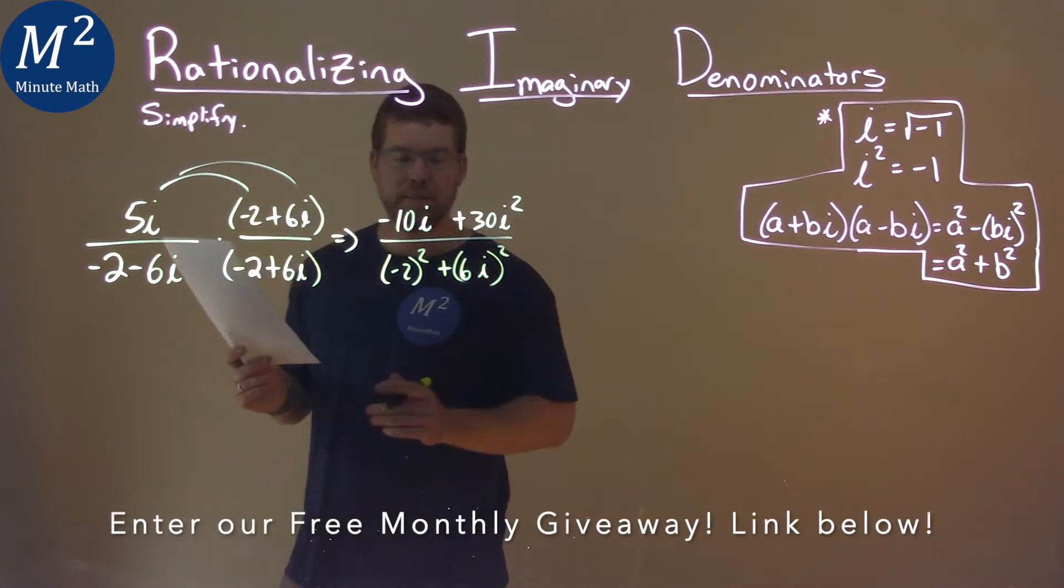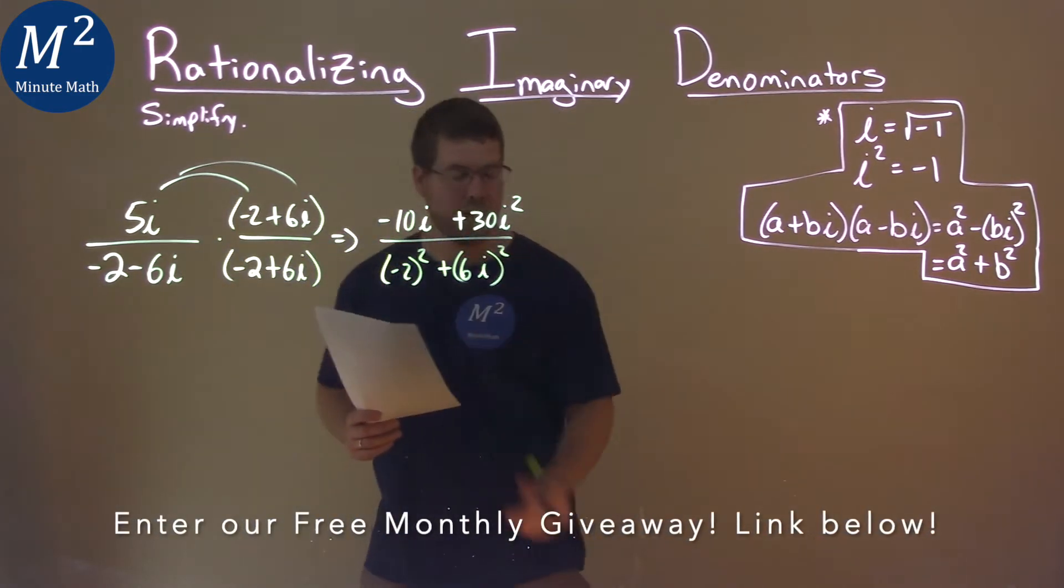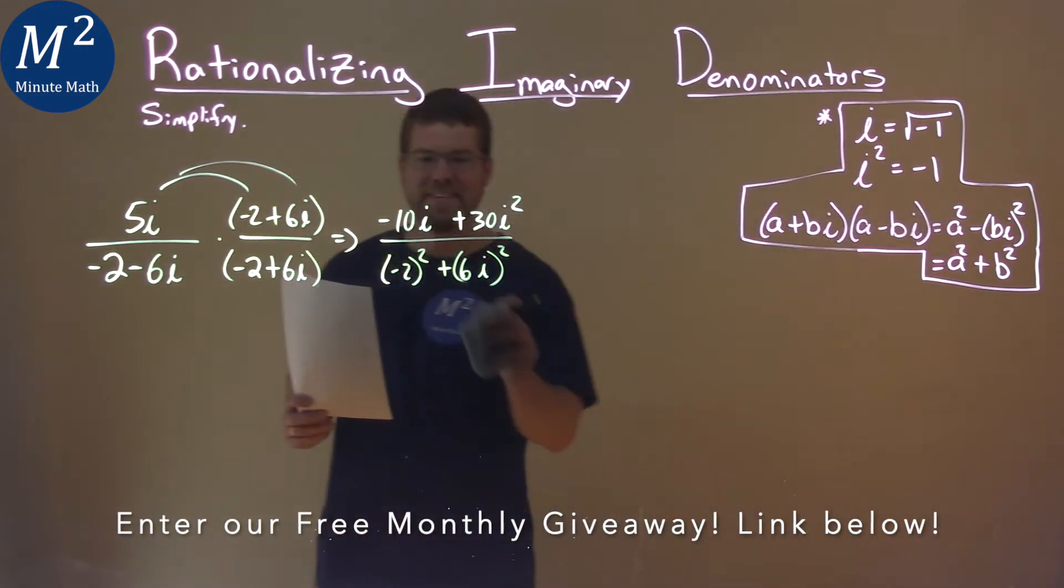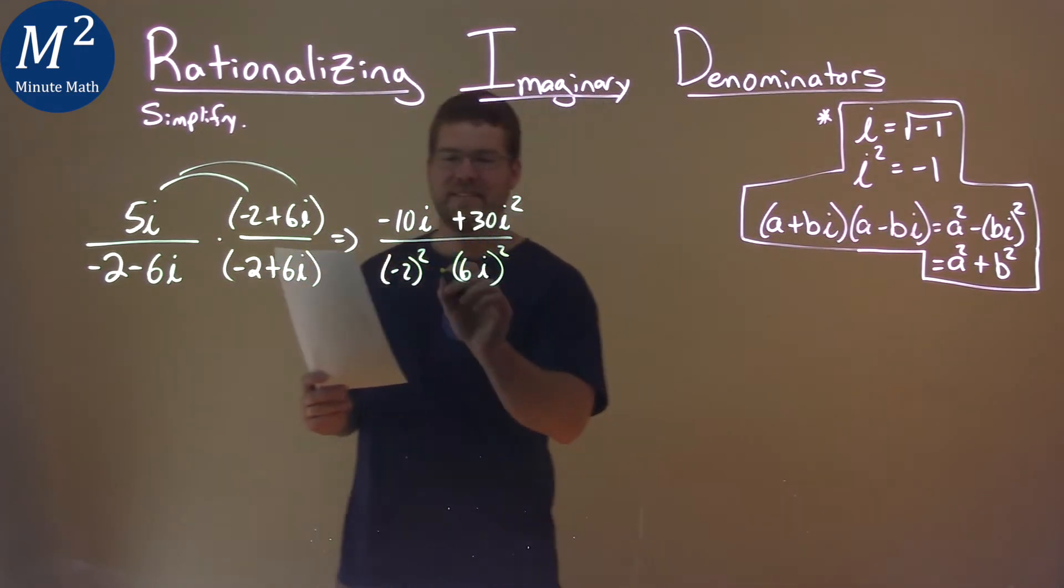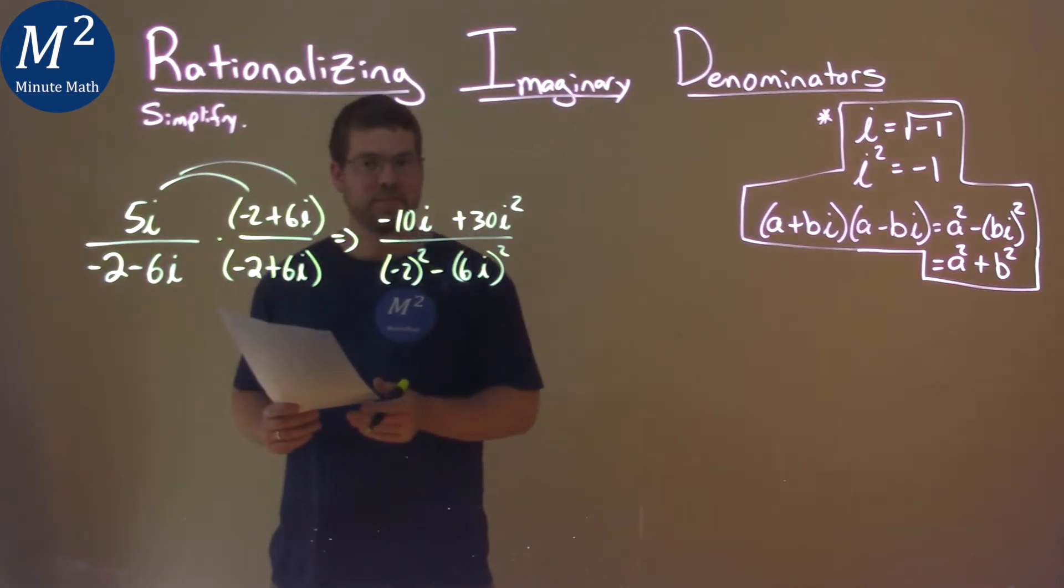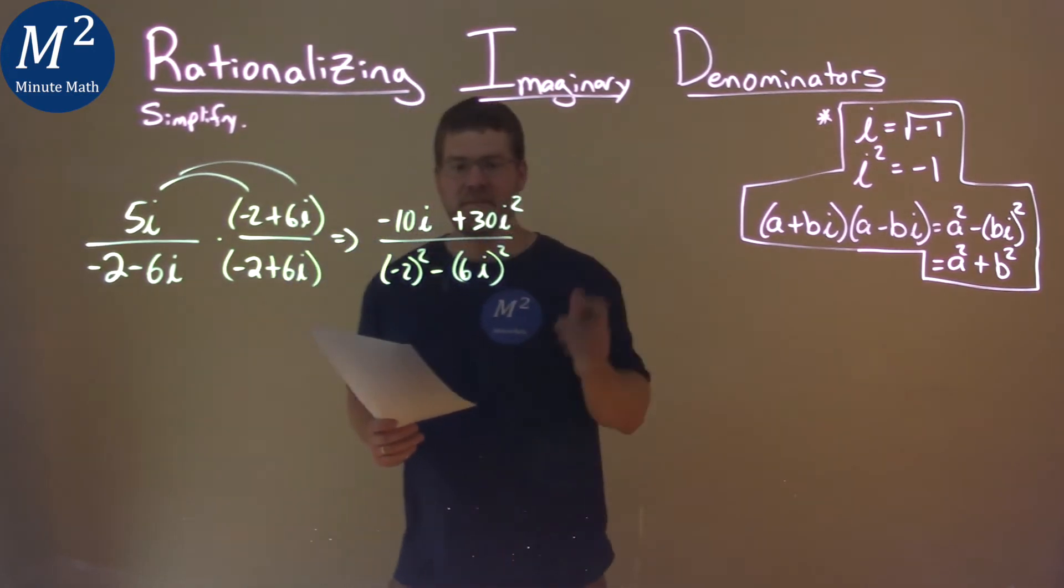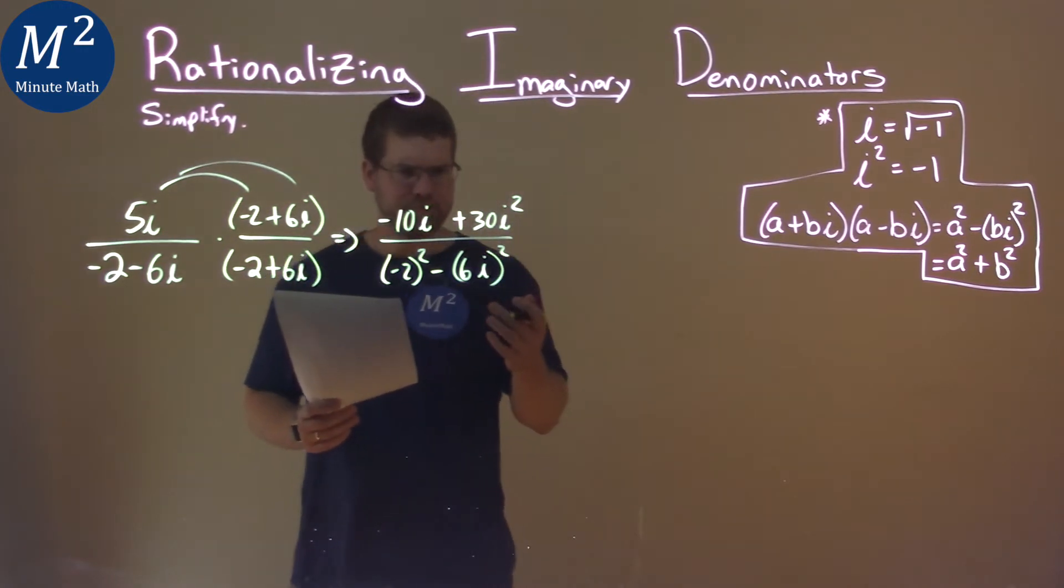And minus 6i squared. The inside parts end up canceling out, and that's the whole point of it.